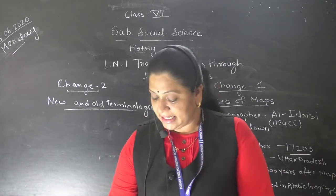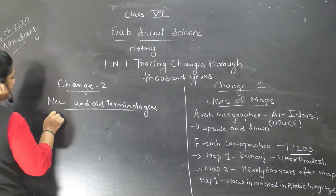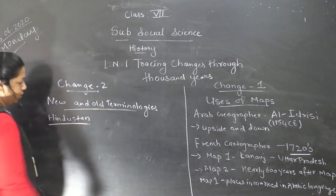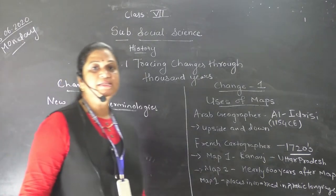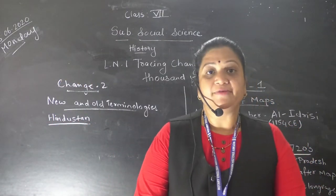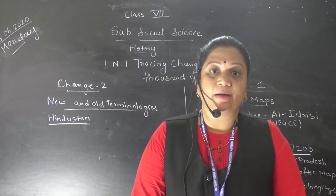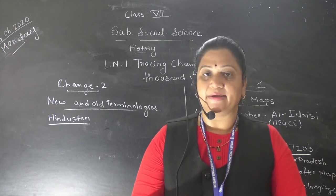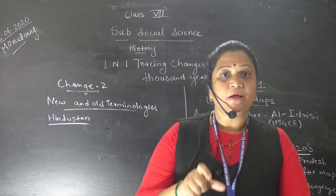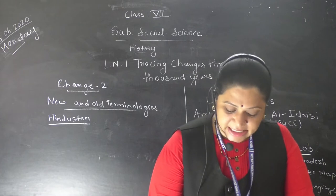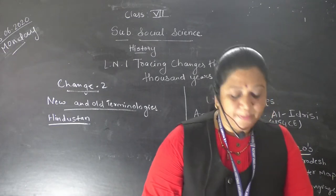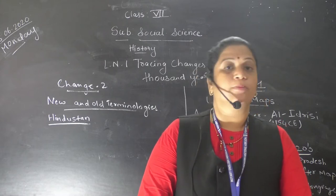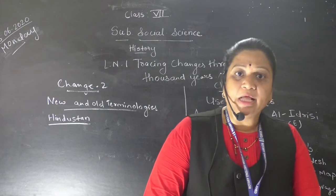For example, we can see the term 'Hindustan.' It was defined differently by different people. Minhaj-i-Siraj, the great scholar, explained that during the Medieval period, the extent of the Mongodhan Tughluq and Delhi Sultanate extended from Punjab to Haryana — the land between the Ganga and the Yamuna.